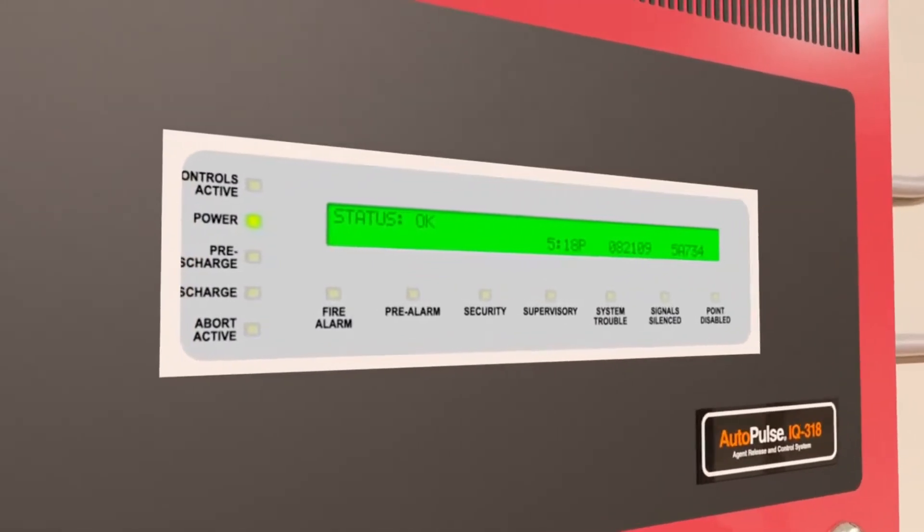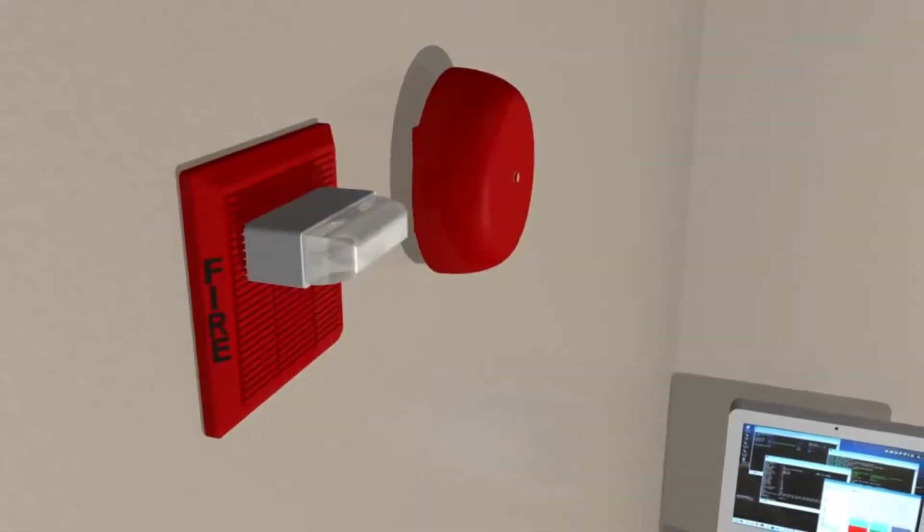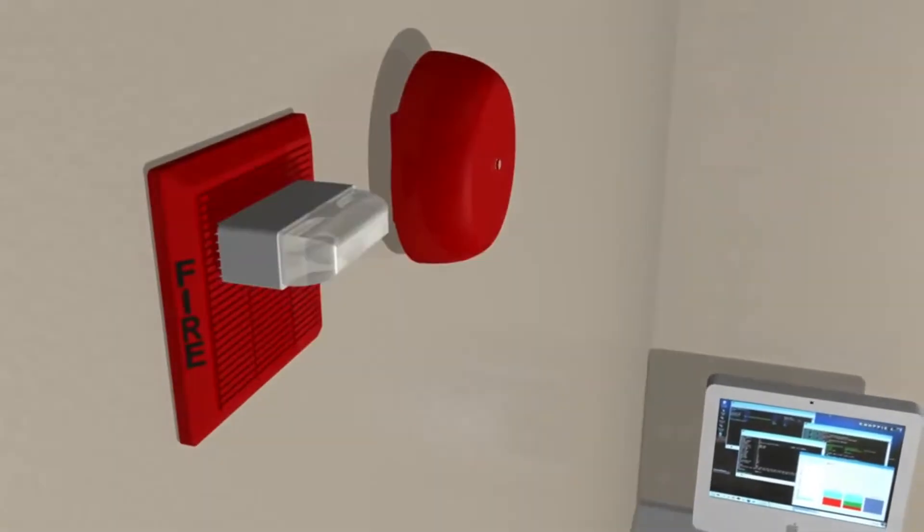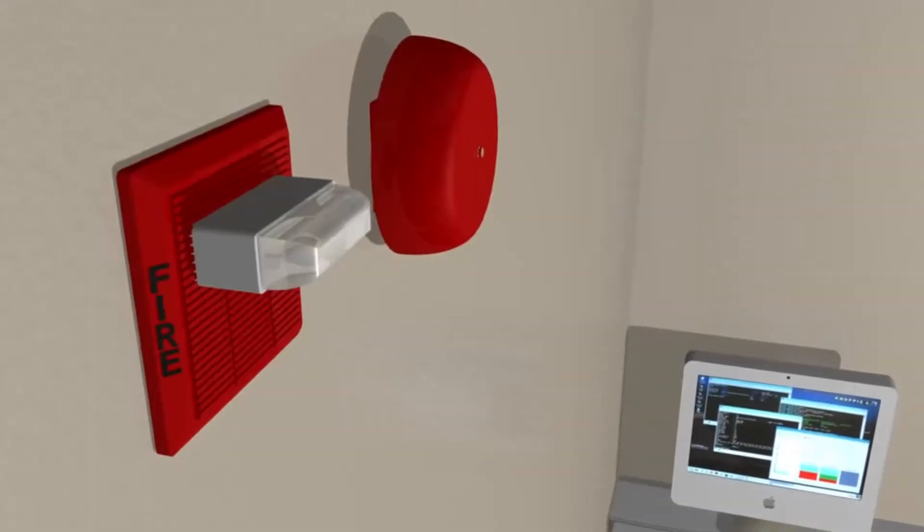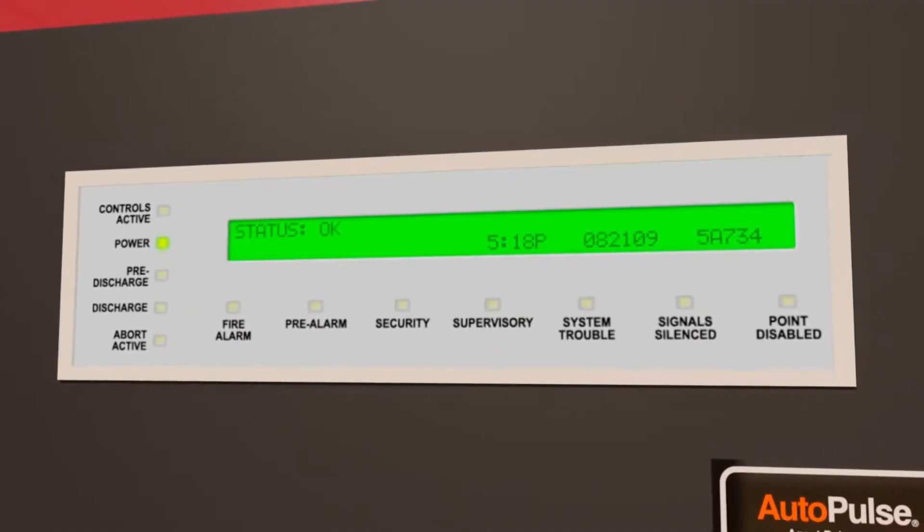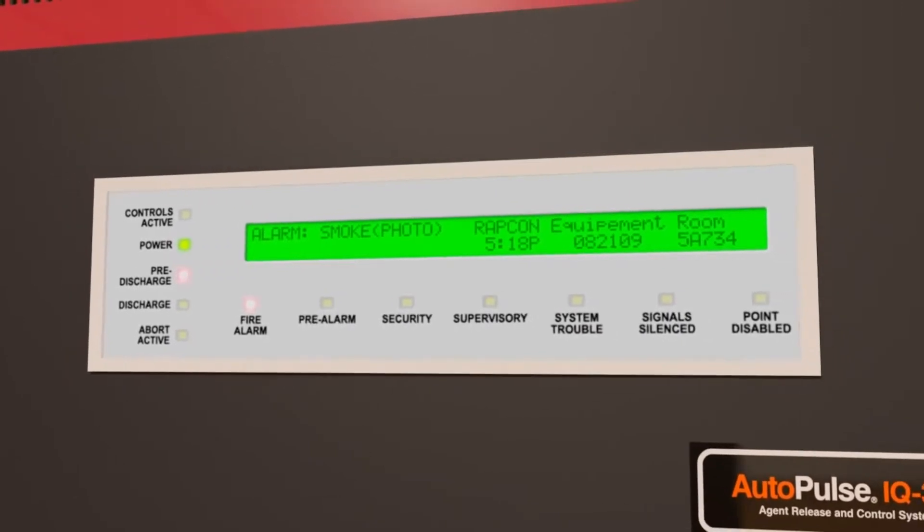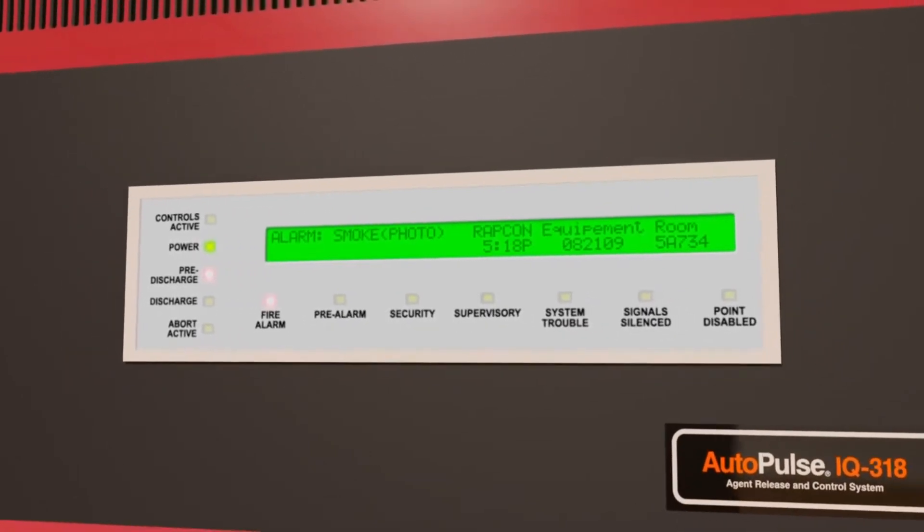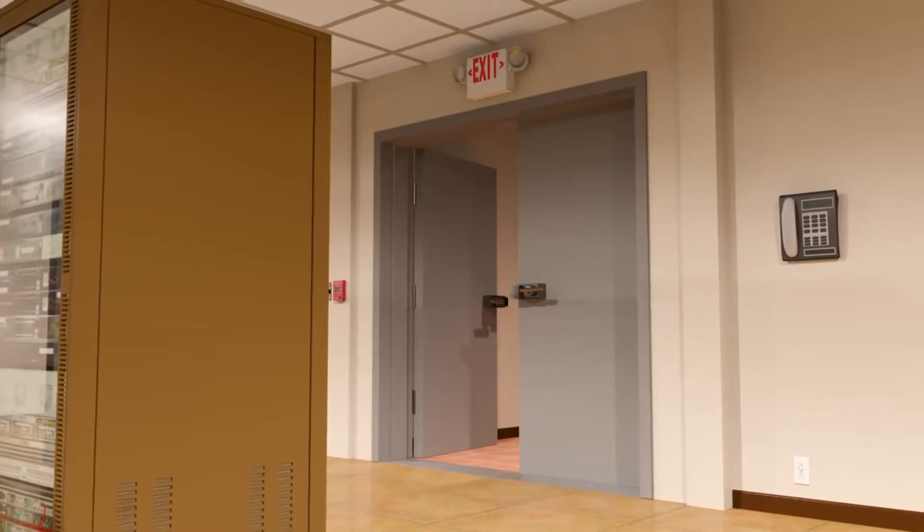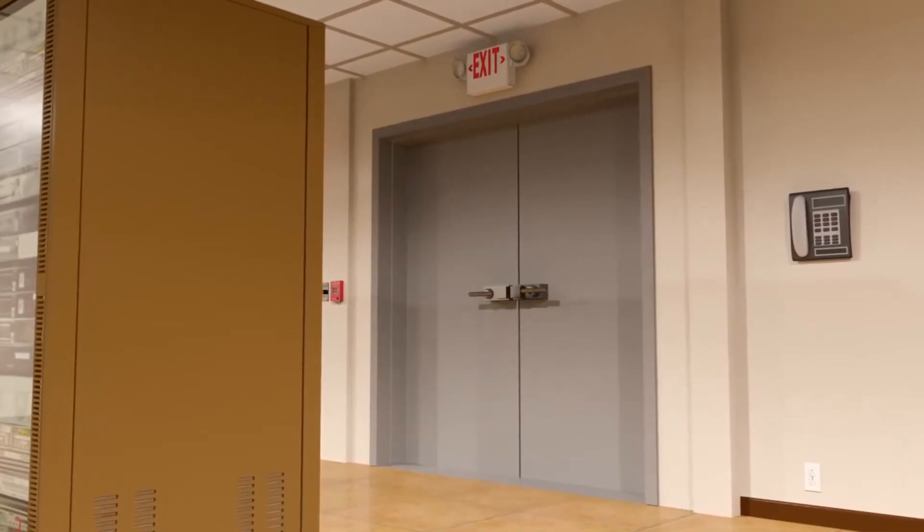Designed to monitor fixed fire hazards, the auto pulse control panel initiates audio and visual alarms throughout the protected area. The auto pulse control panel can also trigger a series of pre-programmed critical actions, like the closing of entryway doors, dampers, or shutting down electrical equipment.